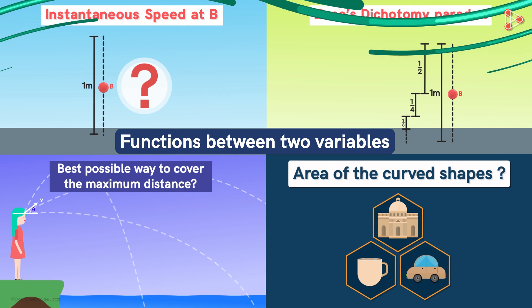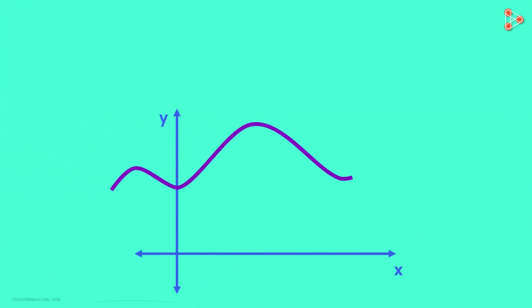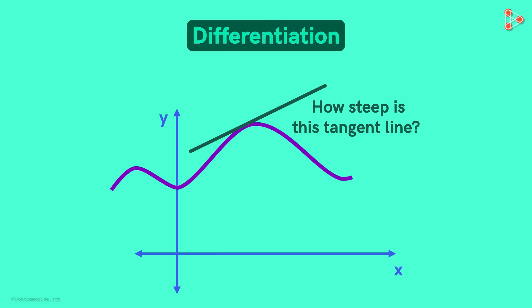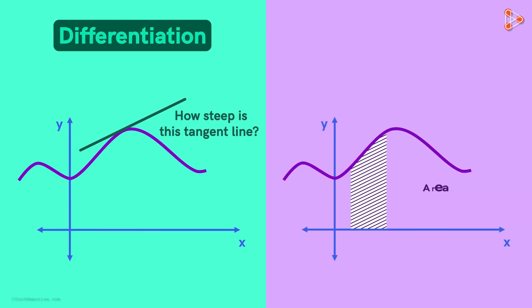Let's say we are given this graph of a function. Then finding the solutions of the problems we discussed earlier boils down to two things. First, to find out the steepness of a tangent line at a point on the curve. Differentiation is the process that's used here. Now the second thing is to find the area of the particular region like this under the curve. Integration is the process used here.